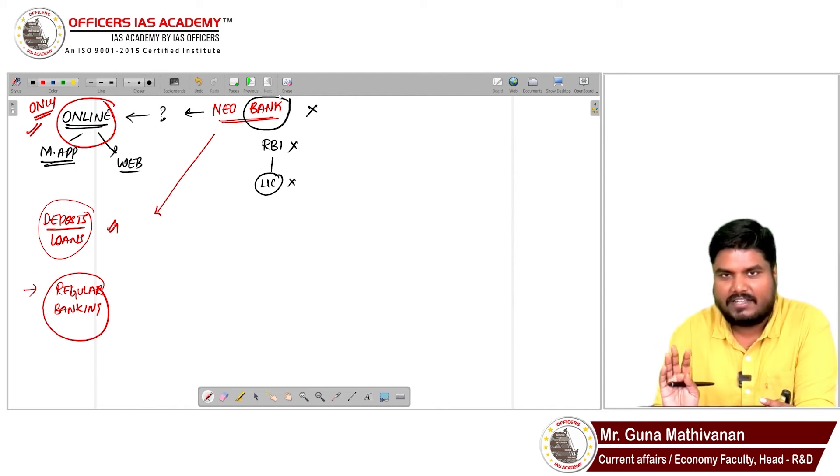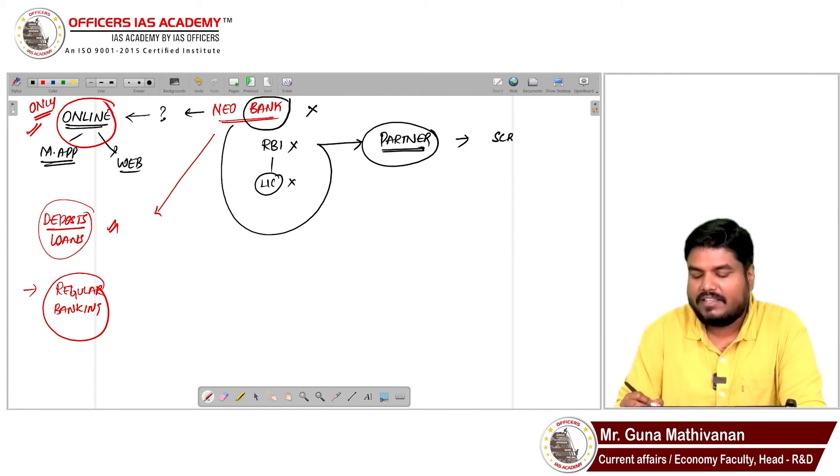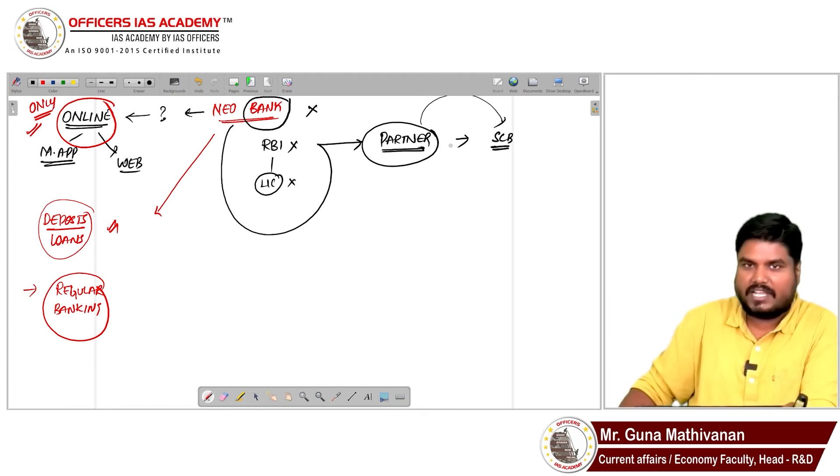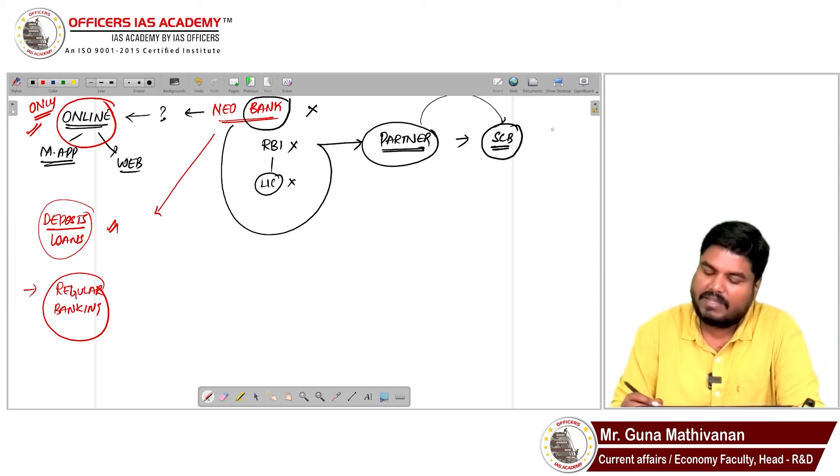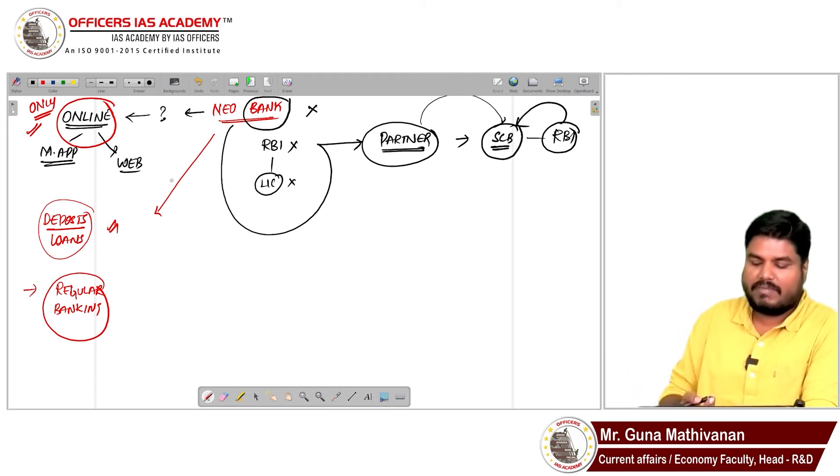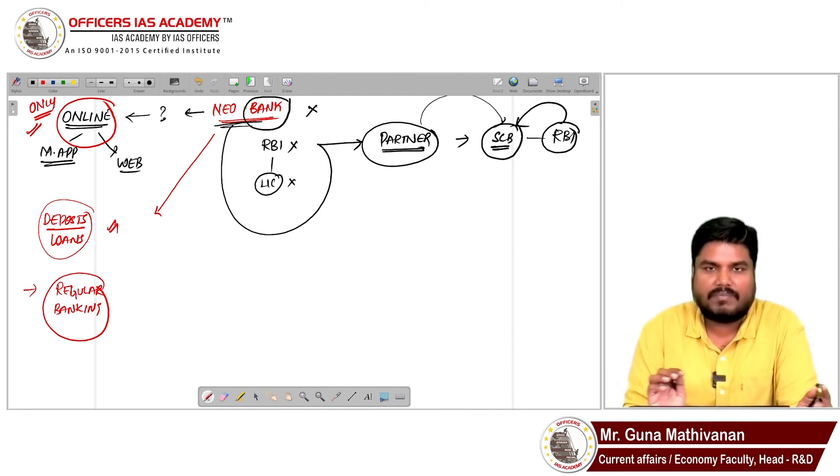It is not regulated by RBI directly. RBI will not give full-fledged banking license for neobanks. These neobanks will partner with a regular scheduled commercial bank. RBI regulates the scheduled commercial bank, and the neobank will partner with them. Neobanks cannot survive separately - they have to partner with scheduled commercial banks. So RBI directly will not regulate a neobank but will regulate the partner banks.